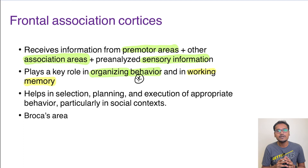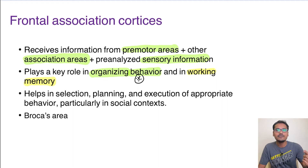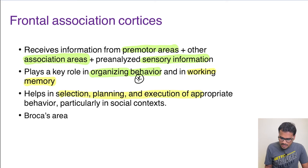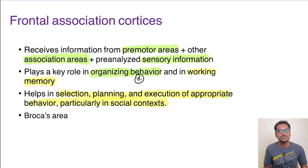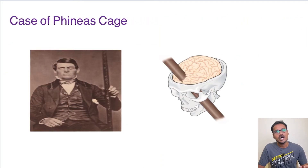Our behavior changes according to social context — at home we are relaxed, but we dress appropriately for meetings. If there is a lesion to the frontal lobe, this socially appropriate behavior is lost and the person will behave inappropriately. The frontal association cortex helps in selection, planning, and execution of appropriate behavior, particularly in social contexts. Also located within the frontal association cortex is Broca's area, which will be discussed in the language and speech lectures.